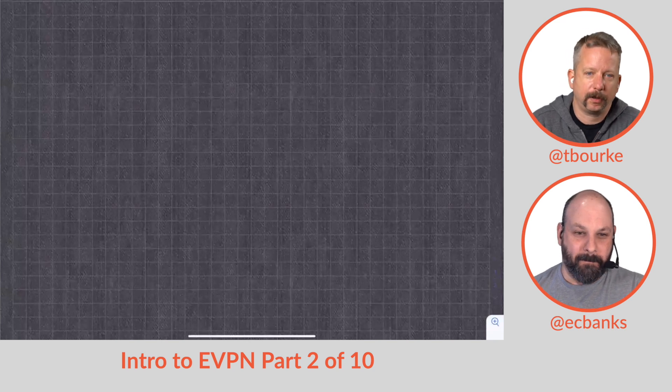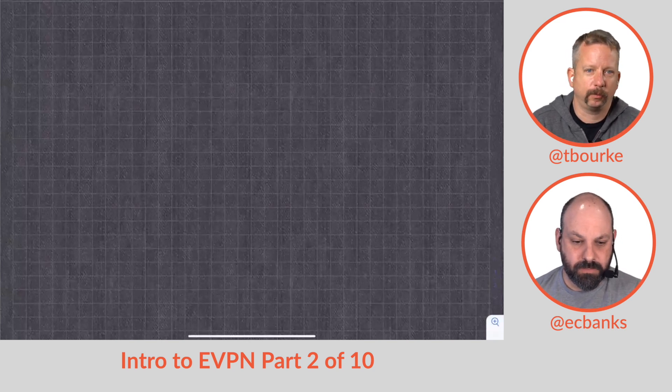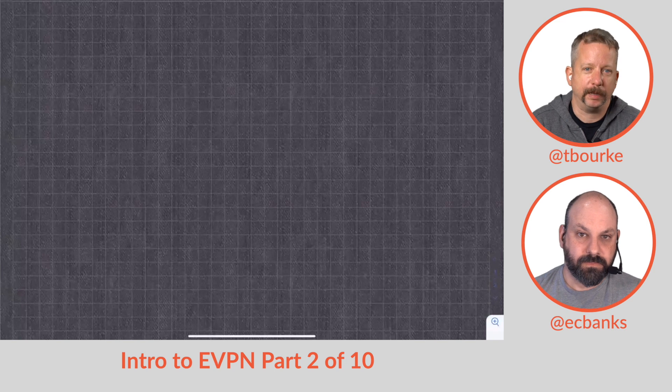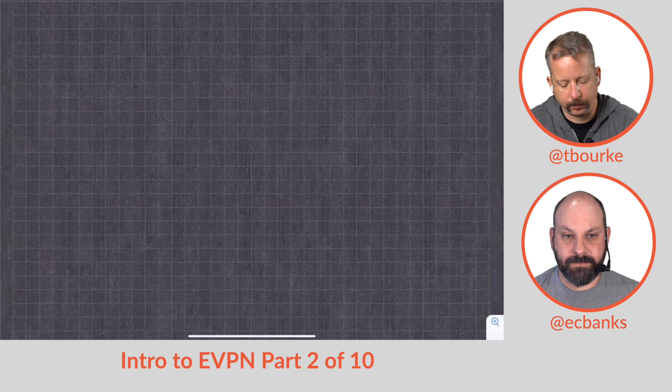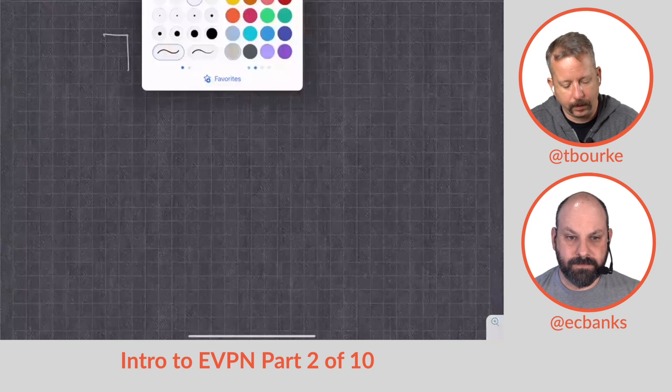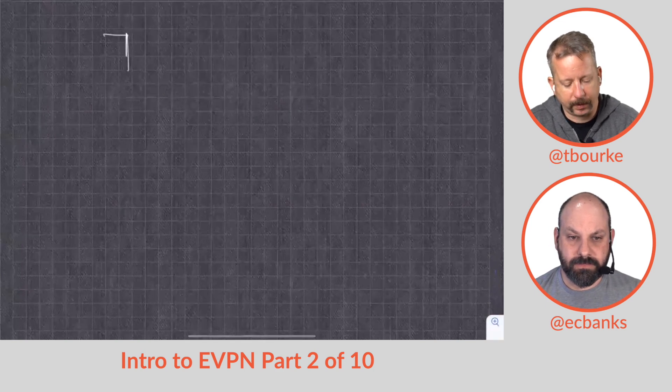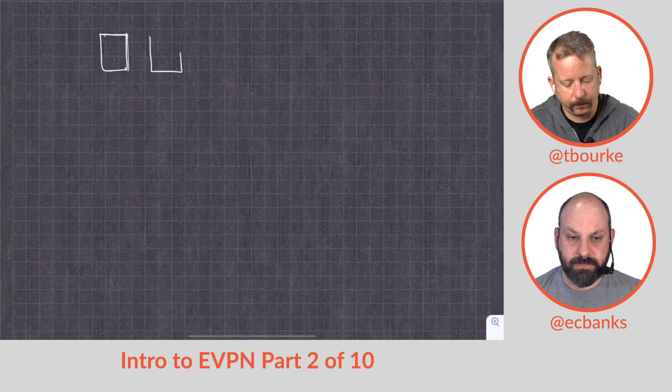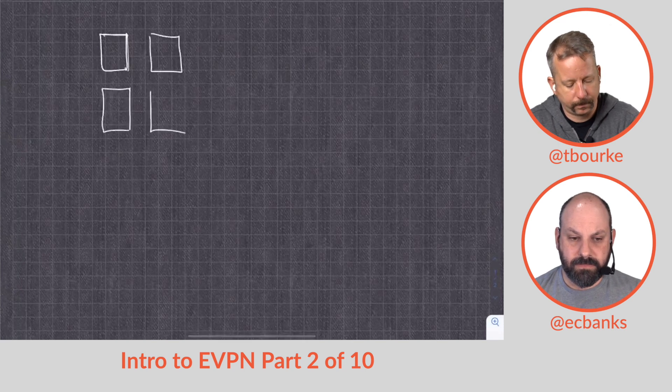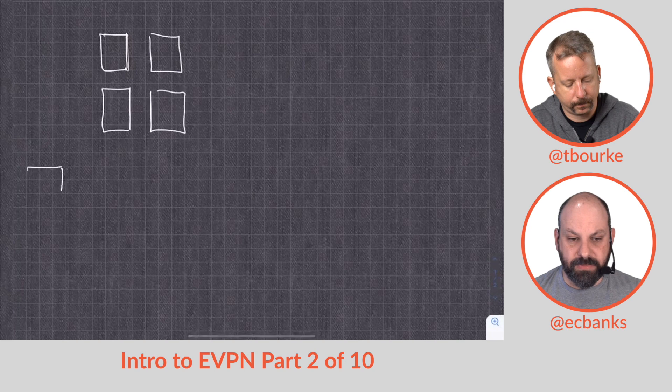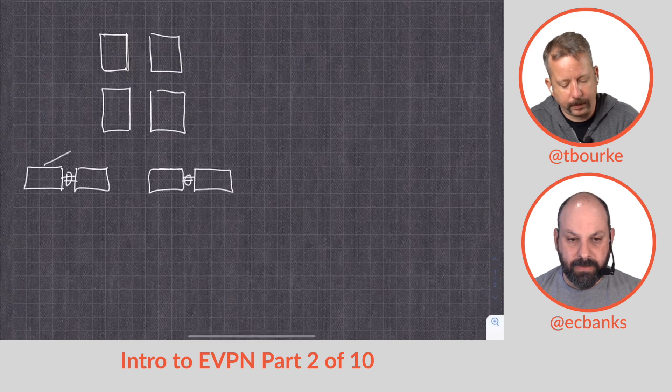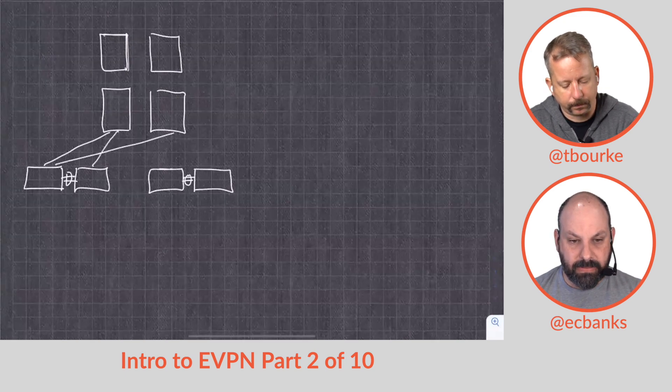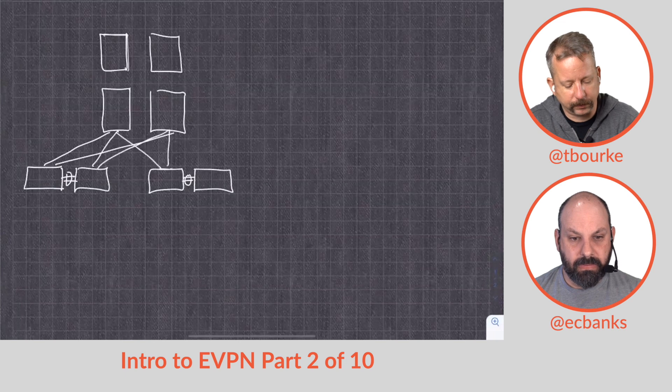First of all, let's talk about one real quick thing about why we're doing EVPN. Our traditional data center network looked probably something like this for most people. I assume what you're drawing here is some kind of aggregation and core layer, access layer, that sort of diagram. Exactly. This is old school.